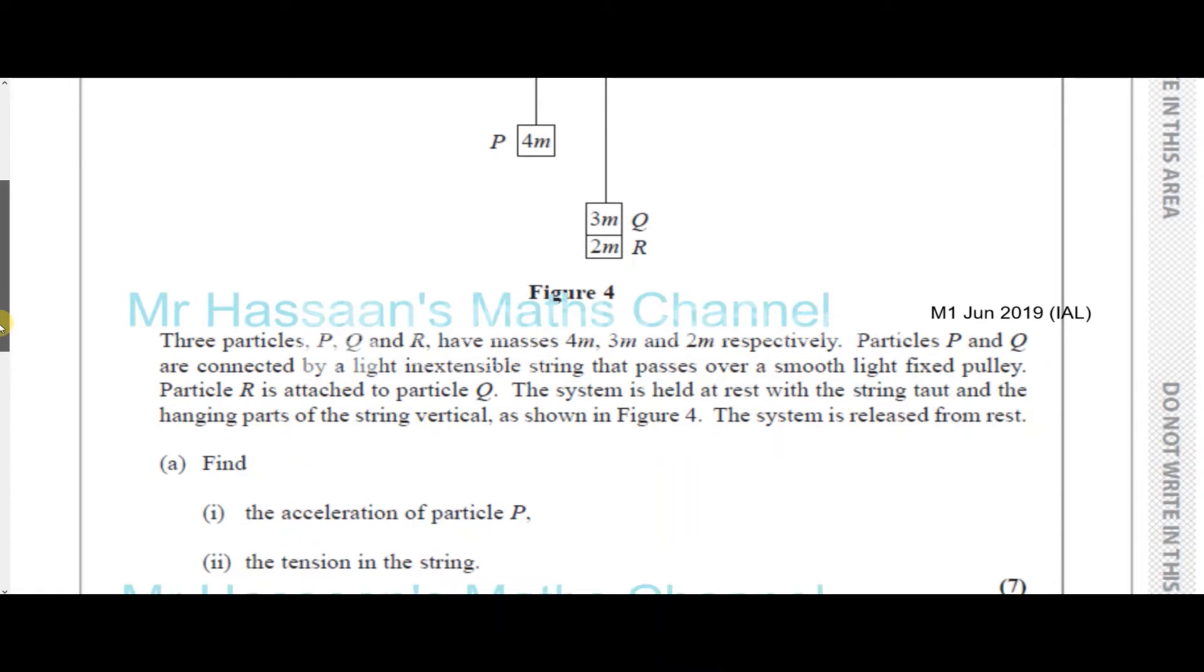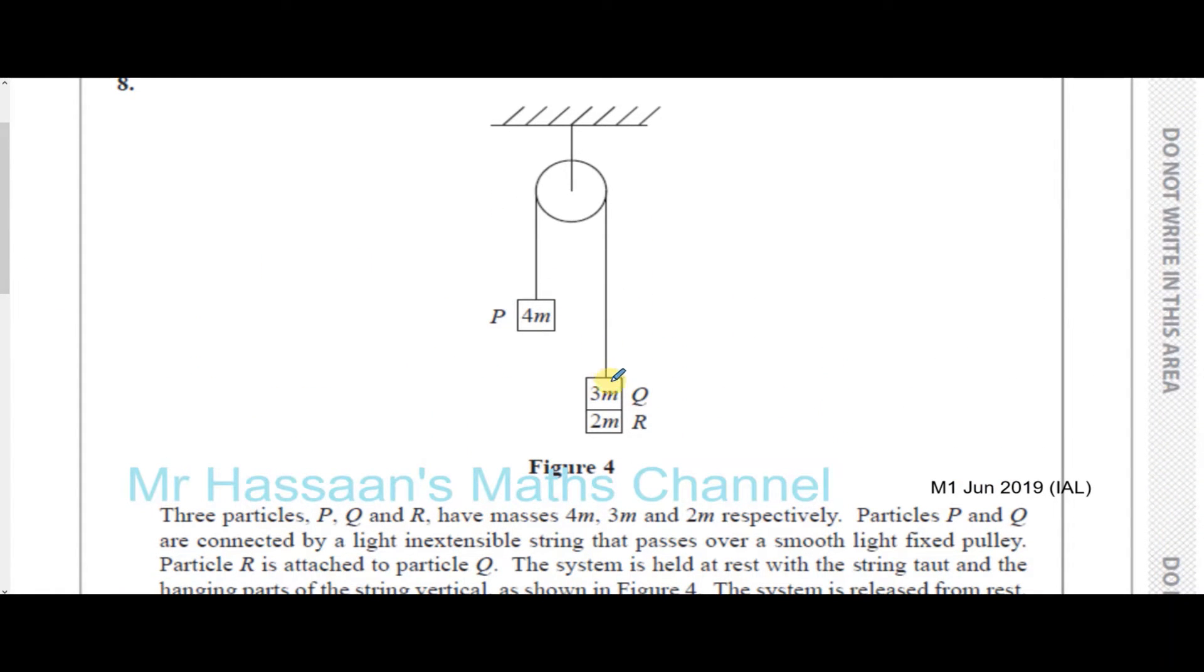Now what we can do here, as Q and R are actually attached to each other, we can treat Q and R together as one particle, because they'll be both moving in the same direction. So we can think of this as one direction that they'll be moving in. So in this system what's going to happen is you have the tension in the string, and you have the weight of the particle so that's 4Mg. And the weight of these two together is going to be 5Mg, 3M plus 2M, and there's the tension in this string. So this acceleration will take place in this direction, as it's going to be moving down, this is heavier, this side.